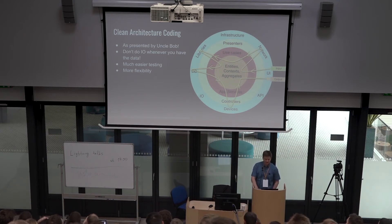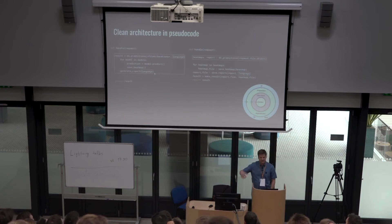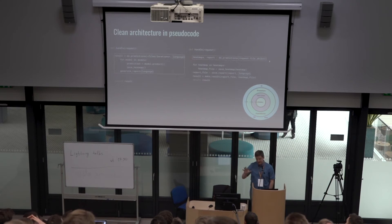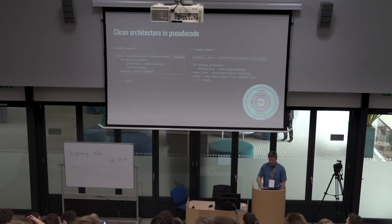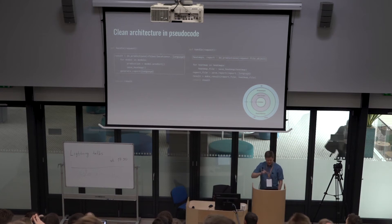It provides much easier testing and more flexibility. A simple example in pseudocode: initially we had everything in one function called 'do predictions'. You pass all the files and the language you want, and in the end you get some result returned to the end user. But if you follow clean architecture, you do predictions without saying where to save anything — you just pass some file object or bytes, and you get some intermediate objects you use later to save to disk. That's really important because if after some time you want to do backup on a backup server, you can do that with one line. Otherwise you'd have to pass all parameters deep inside your prediction model.